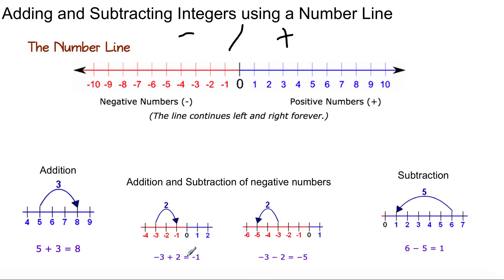Negative 3 plus 2. Negative 3 plus 2. Plus, we're going that way. Two spots over to negative 1. How about negative 3 minus 2? Negative 3, two more over will give you negative 5. And finally, subtraction of whole numbers, 6 minus 5. 6 minus 5 will take you to 1.